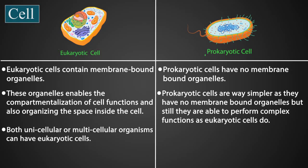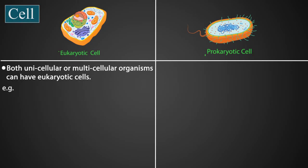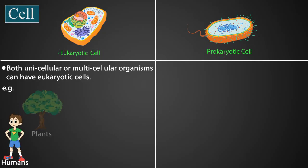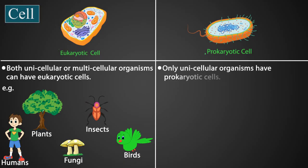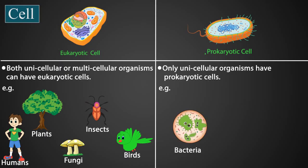Both unicellular and multicellular organisms can have eukaryotic cells. Examples of eukaryotes are humans, plants, fungi, insects, birds, and all types of animals. Only unicellular organisms have prokaryotic cells. Examples of prokaryotes are bacteria and archaea.